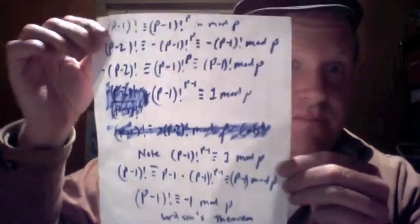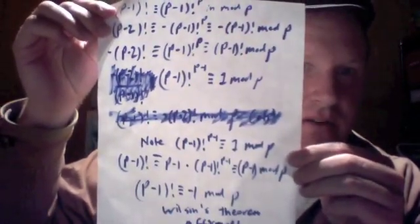We're going to back up, and I'll hold the paper out here. Wilson's Theorem is affirmed. We now know that if we have the factorial of the number just below a prime, that's going to be equivalent to -1 mod that prime — i.e., it's going to be some multiple of that prime minus 1. Thank you very much.